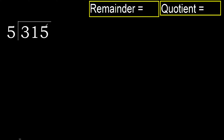315 divided by 5. 3 is less, therefore next. 31 is not less, therefore we work with 31.